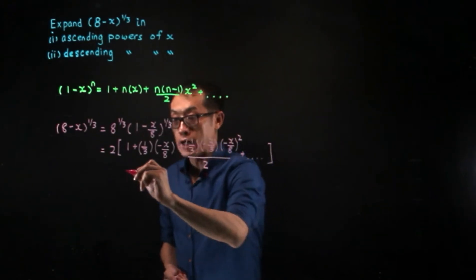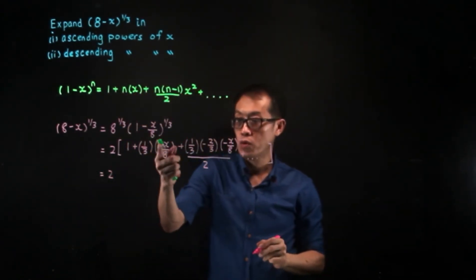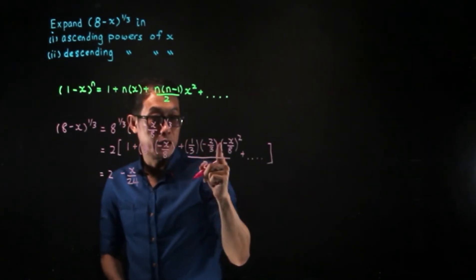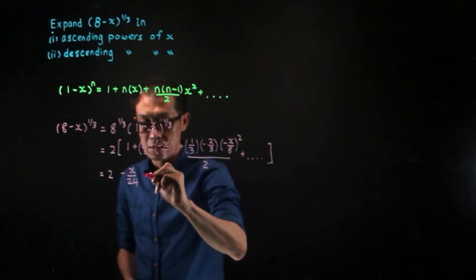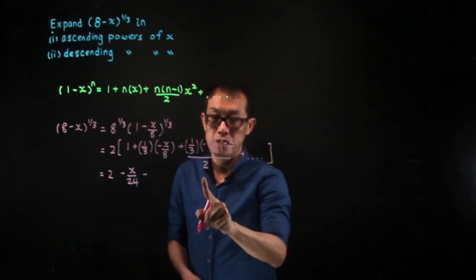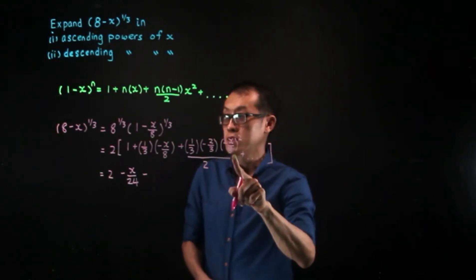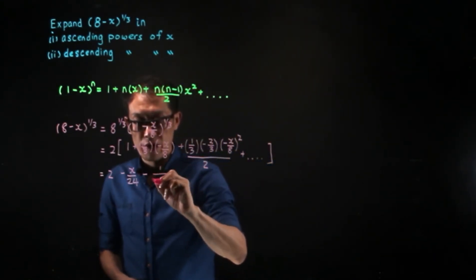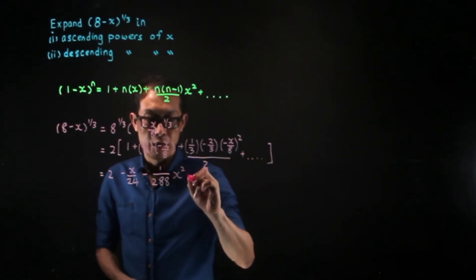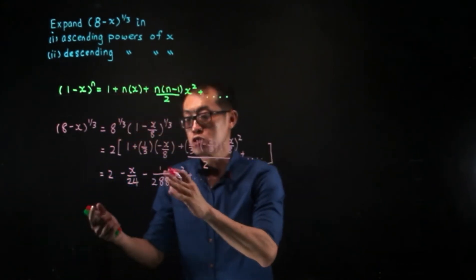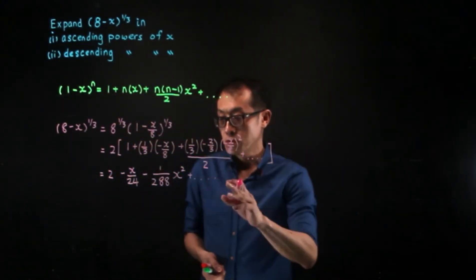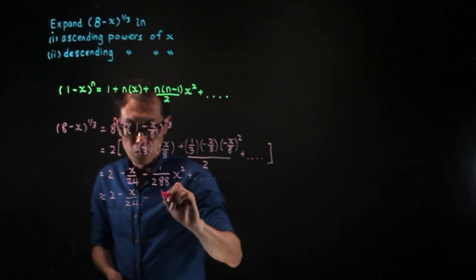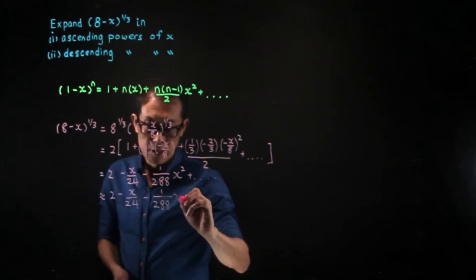Multiplying through, the first term gives 2. The second term gives minus X over 24. For the third term, the two negatives cancel, and squaring gives 64 in the denominator; dividing gives 1 over 288, so the term is minus X squared over 288. Stopping at the first three non-zero terms, the expansion is approximately 2 minus X/24 minus X²/288.